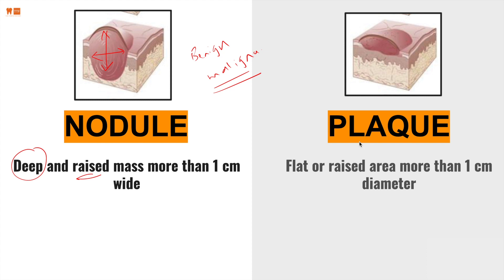Plaque is raised, however flat — there is no vertical dimension, there is a horizontal dimension in plaque. It's a little bit raised, more than one centimeter in diameter, but it's only slightly raised.